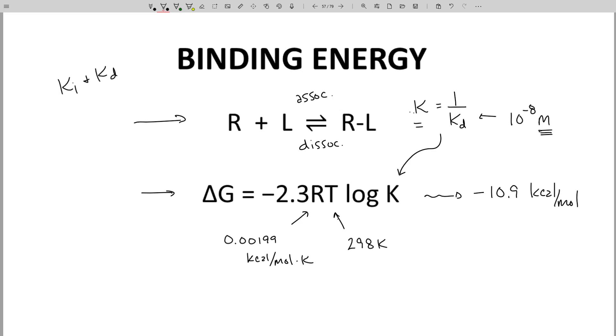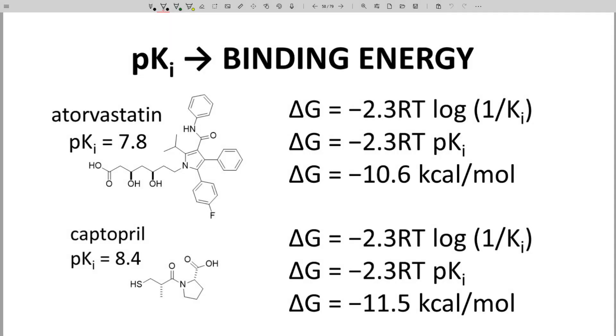Let's do a couple potency calculations based on drugs found in IUPHAR's Guide to Pharmacology. Here is a drug, atorvastatin, also called Lipitor. It's a treatment for high cholesterol. Its potency as an enzyme inhibitor in humans is listed as 7.8, and that's the pKI. Remember, pKI is equivalent to the negative log of KI or log of 1 over KI.